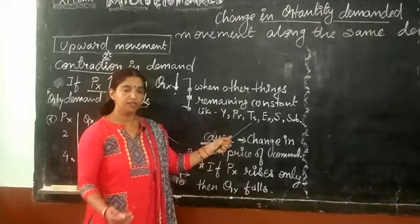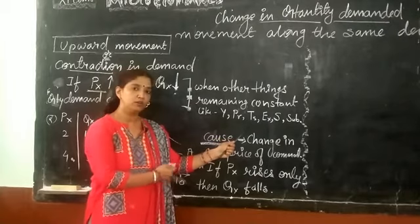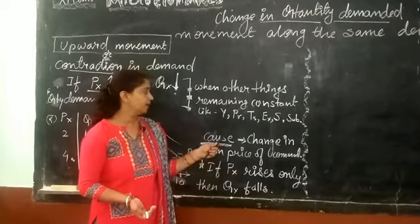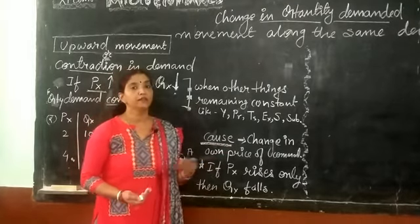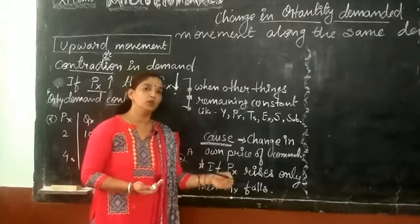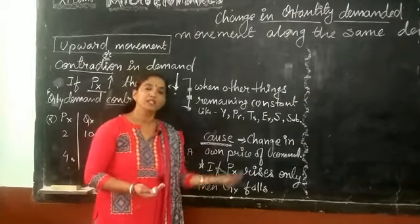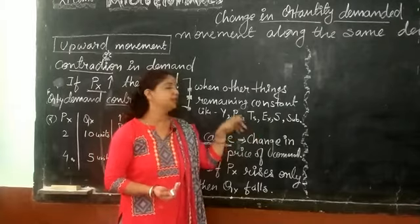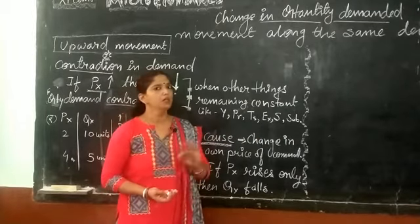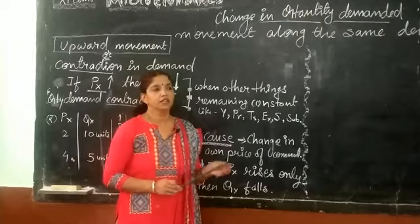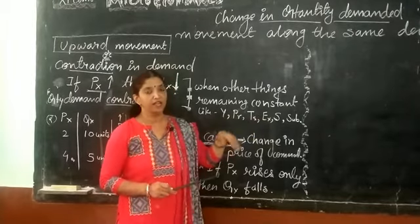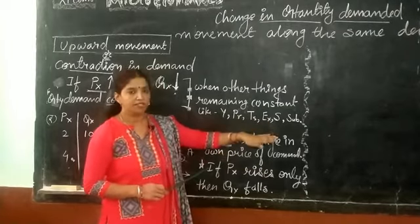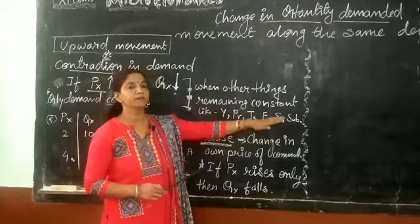Preference of the consumer for that particular commodity also remains the same — no change in taste, fashion, preference, and other things. No change in price of related goods; related goods are of two types, so no change in complementary goods, no change in price of substitute goods, and no change in money income of the consumer. No change in future expectations, even regarding changes in availability of that commodity.